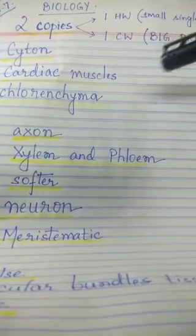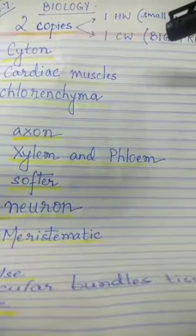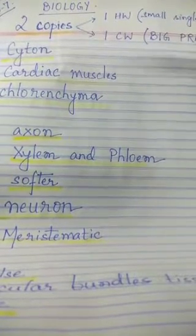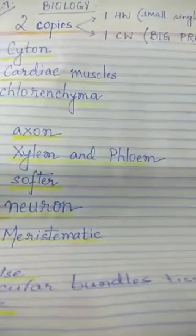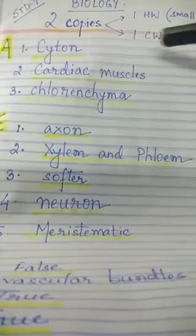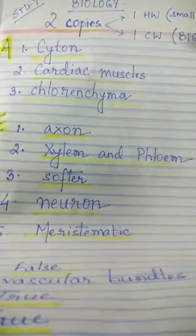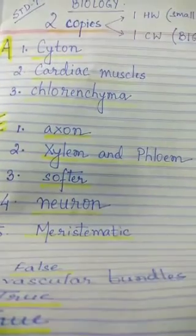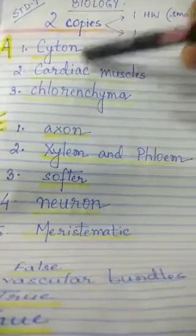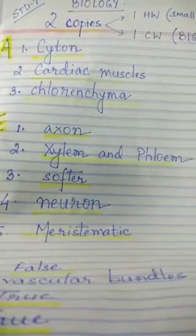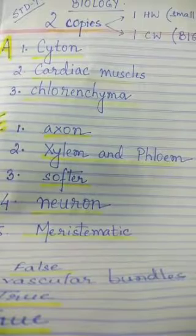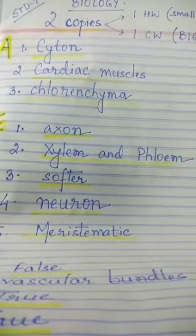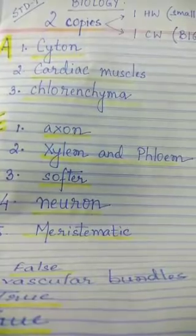Page number 25, subpart A: Name the following. The answers are written here. First one: cell body of a neuron is cytone. Heart muscles are cardiac muscles. Parenchyma cells containing chloroplast are called chlorenchyma. Next, move to fill in the blanks.